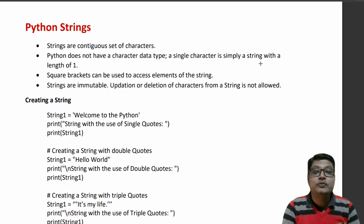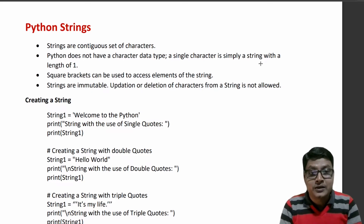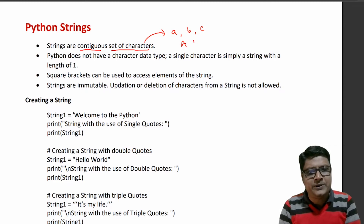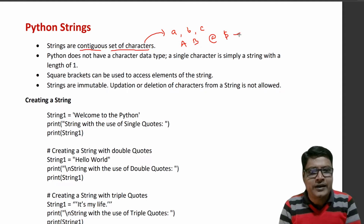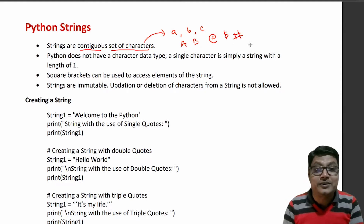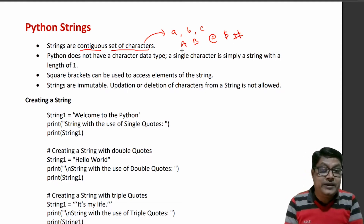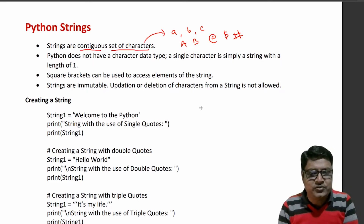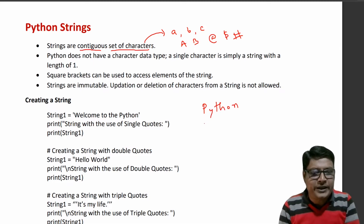A string is a contiguous set of characters. Characters meaning A, B, C, D, X, Y, Z, capital A, capital B — these are characters, including special characters like at-sign and dollar sign. So if I have the string 'Python', that is a string.